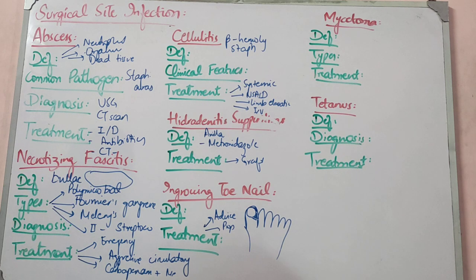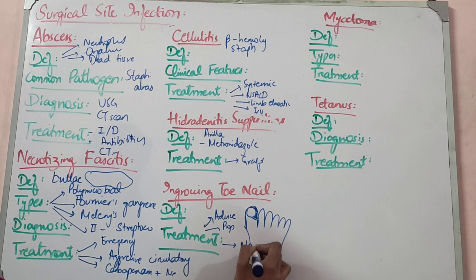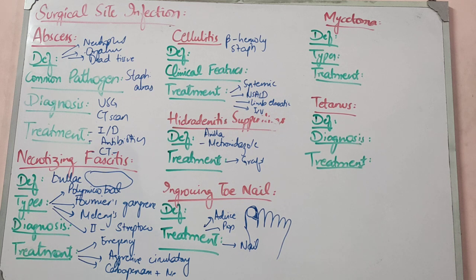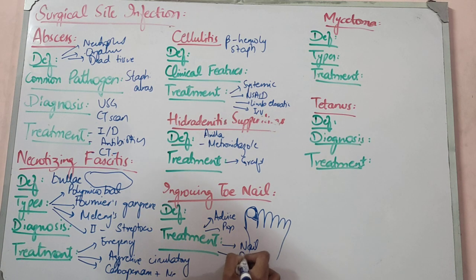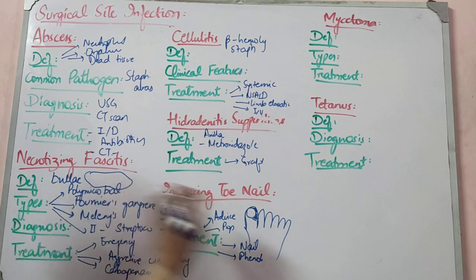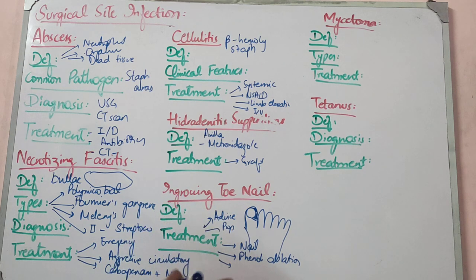Keep the toe soaked in water; put a cotton wisp under it so it is elevated from the bed so it won't grow into the tissue. If there is infection, remove the nail. After nail removal, if it is recurrent, you have to remove the nail from the nail bed — avulsion — so it will not recur.